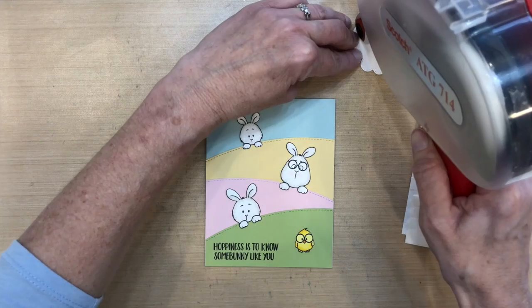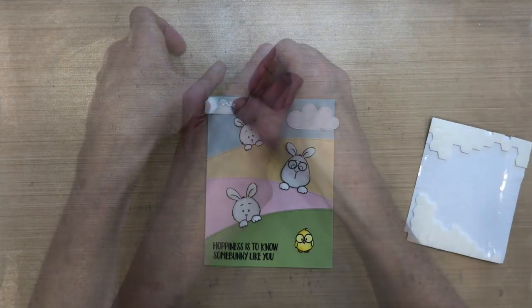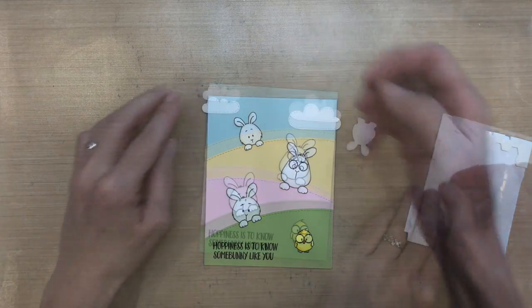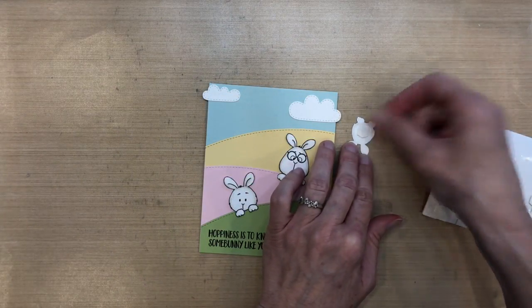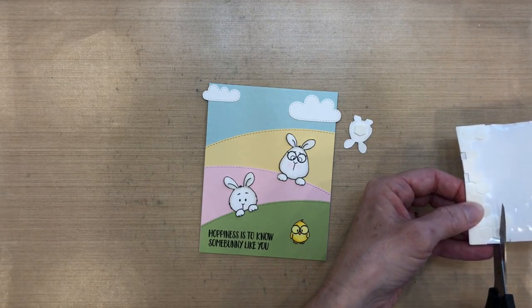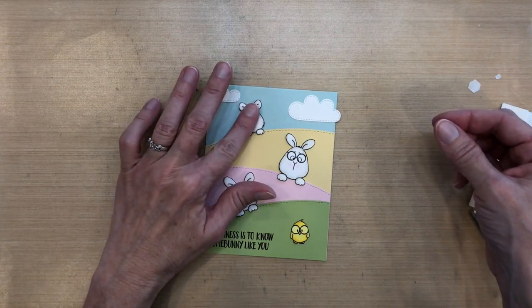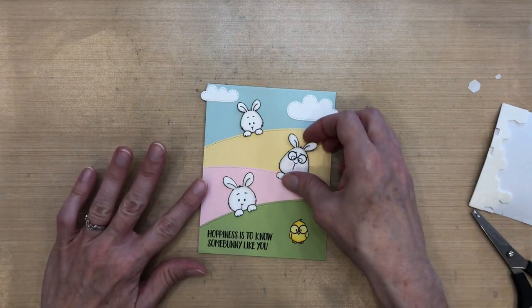I cut those clouds with some Neenah cardstock, and then I'm going to put some ATG on the back of these clouds. I made the right one a little bit lower, the left one a little higher, and they're both hanging off the edge. For all of my bunnies I used dimensionals - these are by Stampin' Up and they're these circles that you can cut. They're really handy and I like to use them for small things. So I'm going to use those on all the bunnies as well as the bird.